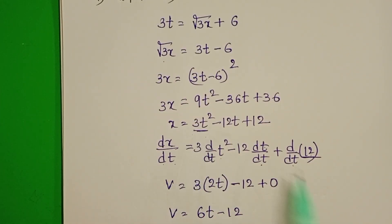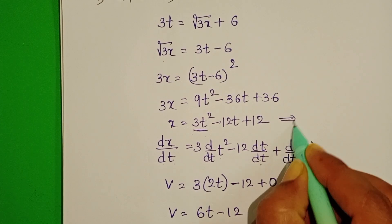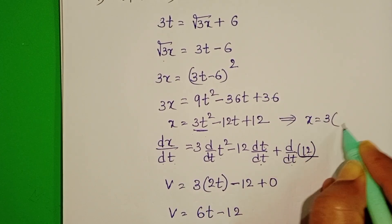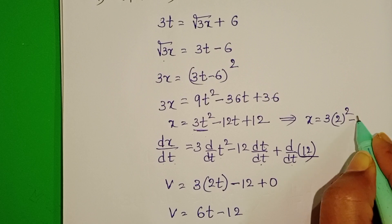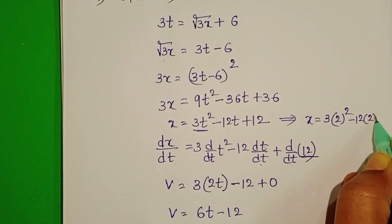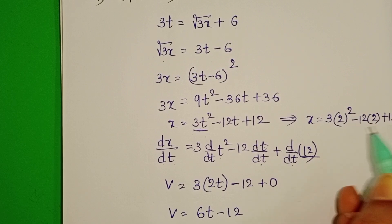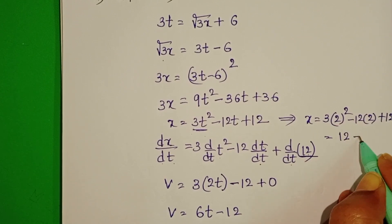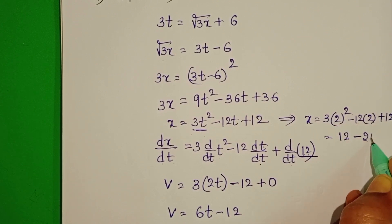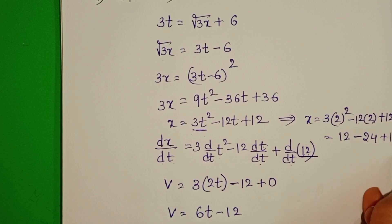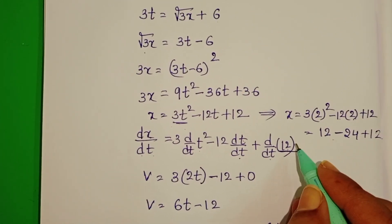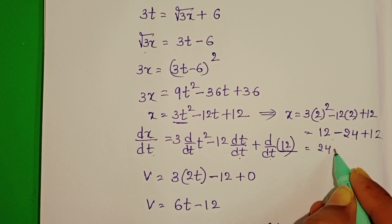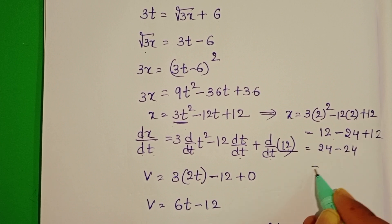Substitute t equals 2 seconds in the equation x equals 3t squared minus 12t plus 12. x equals 3 times (2) squared minus 12 times 2 plus 12. That gives 4 times 3 equals 12, minus 24, plus 12. So 12 minus 24 plus 12 equals 0. The displacement is 0 meters.